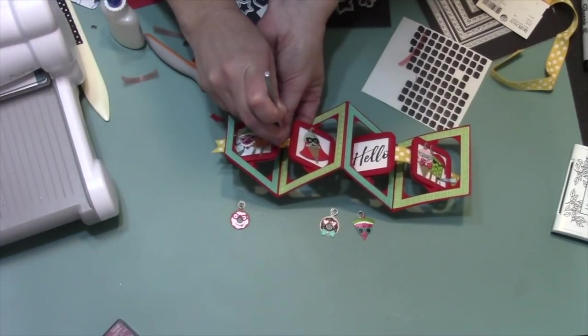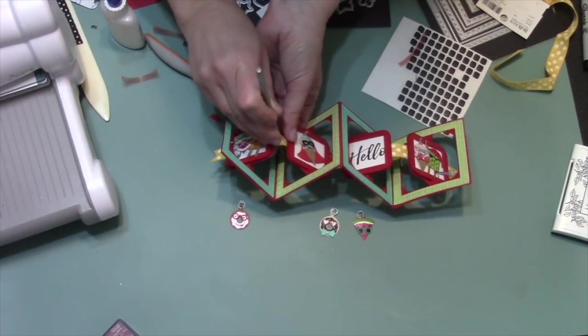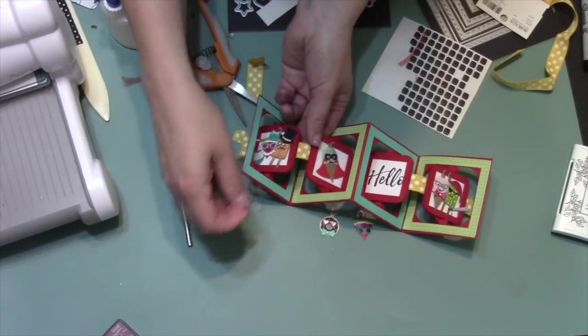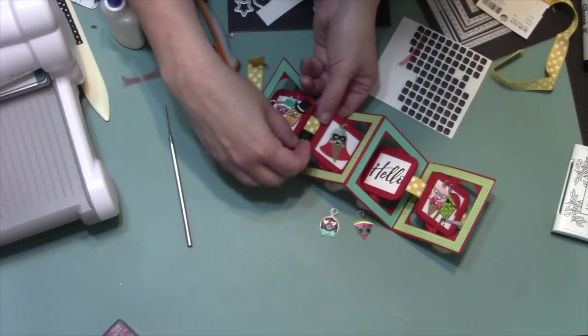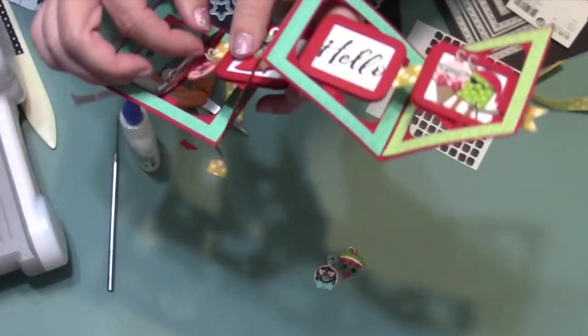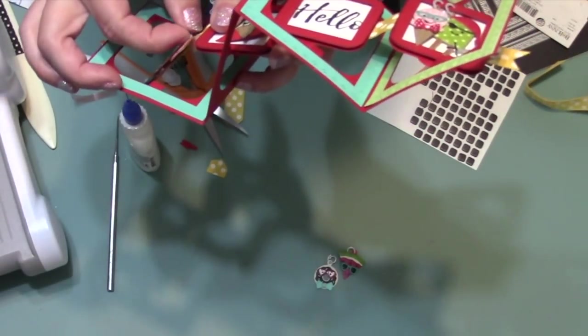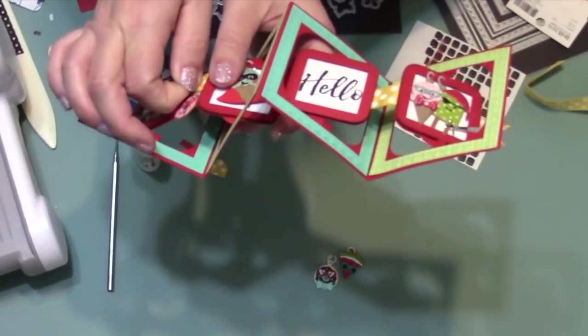With my final three charms, I'm going to hang those off of the ribbon, so I need to make sure that I poke and enlarge a hole that's big enough to get that paper jump ring through. Then in this case, I want to seal my jump rings, so that means adding a spot of glue out on the end and then overlapping the two ends.